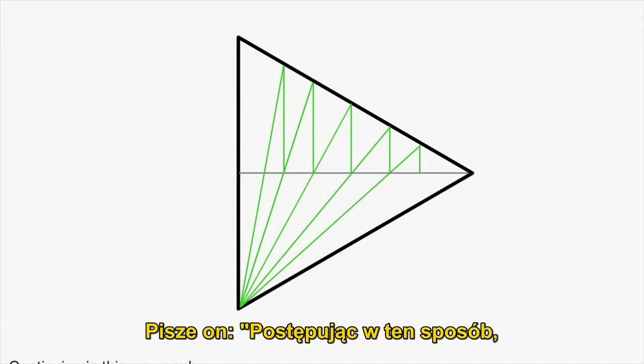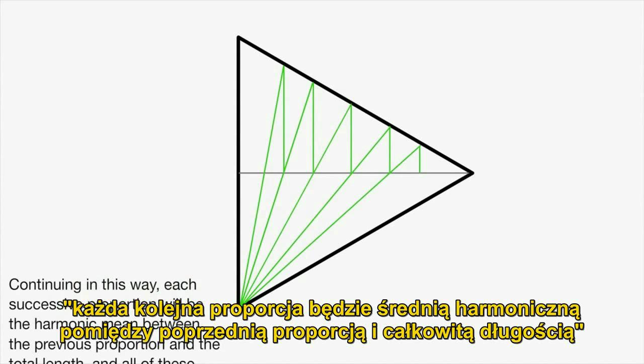He writes, continuing in this way, each successive proportion will be the harmonic mean between the previous proportion and the total length, and all of these proportions will be musically significant.